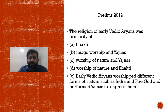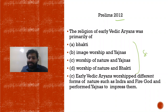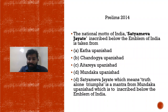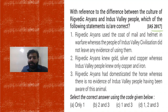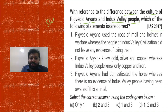You have to analyze how to answer the question. This is your Prelims 2012 question. If you look at the nature of this question, it is a highly simple question from the present scenario — UPSC questions were easier then, but by 2014 the level increased. For example: the national motto of India 'Satyamev Jayate,' inscribed below the emblem of India, is taken from which source?